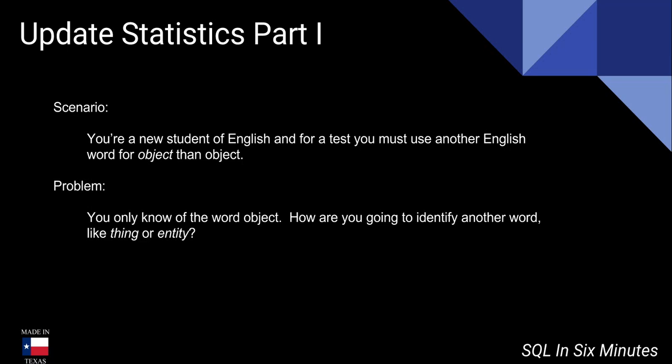Let's suppose that we're all new students of English. We know what the word object means. Object is basically a thing. But we don't know what thing means, and we don't know what entity means. We just know what object means. And let's suppose that we're taking an open book test where we can use a dictionary and a thesaurus. On our test it says, here's a list of words that you cannot use. You need to write an essay, but you cannot use these words. And one of those words we cannot use is object.